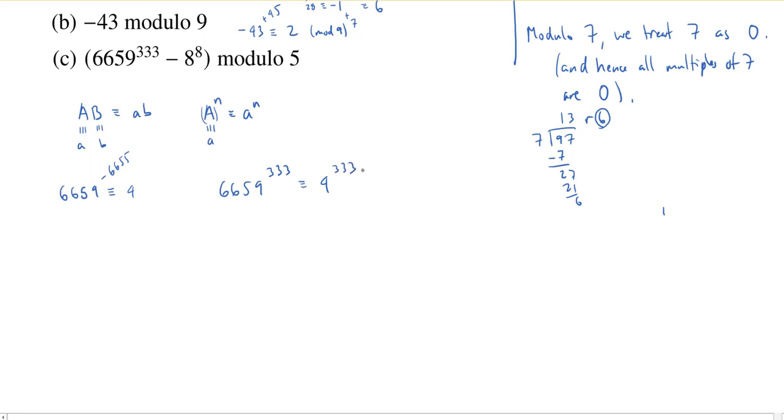And so now I'll have 6659 to the 333rd power is congruent modulo 5 to 4 to the 333rd power. But actually, I would have preferred to go a little bit more because 4 is congruent to negative 1 modulo 5. And that's going to be a lot easier to do an exponential of. So instead of subtracting 6655, I could have subtracted 6660. A multiple of 5 and I'd have something now which is congruent to negative 1 mod 5.